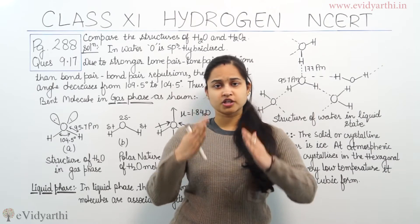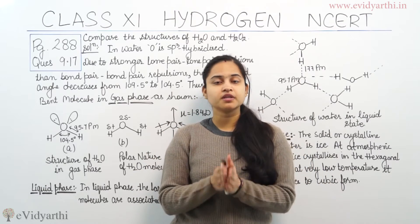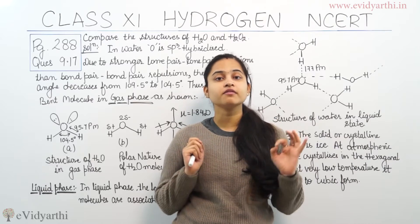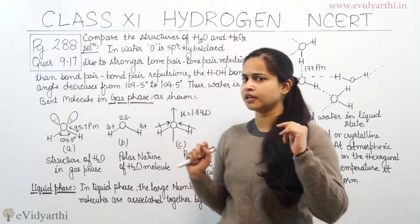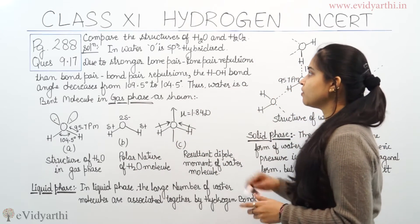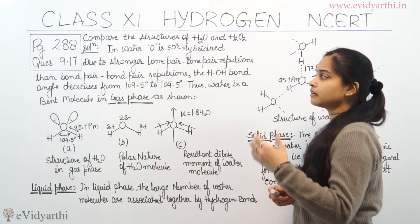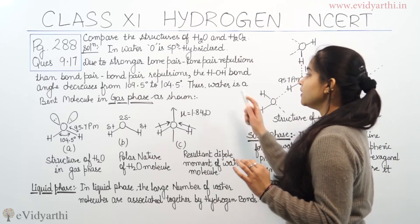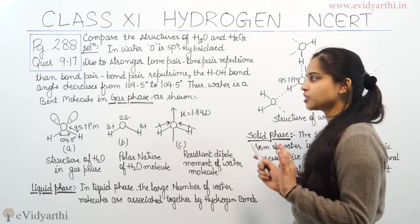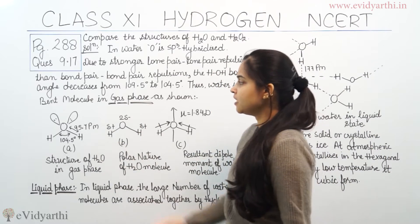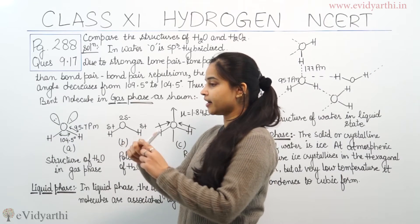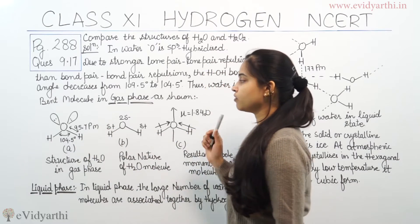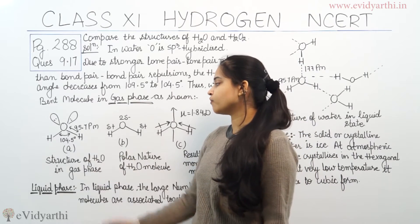When the angle is decreased, the structure is bent. In the gas phase, it has a bent structure with an angle of 104.5 degrees. In water, oxygen is sp3 hybridized; due to stronger lone pair-lone pair repulsion than bond pair-bond pair repulsion, the H2O bond angle decreases from 109.5 degrees to 104.5 degrees. Thus, water is a bent molecule in the gaseous phase. The H2O bond length is 95.7 pm.